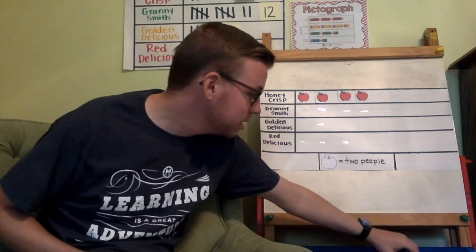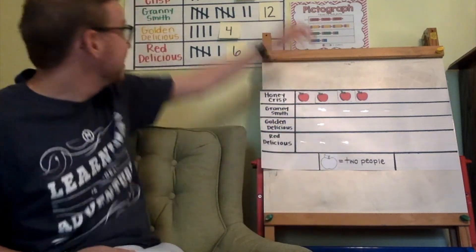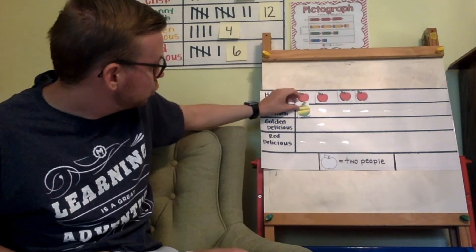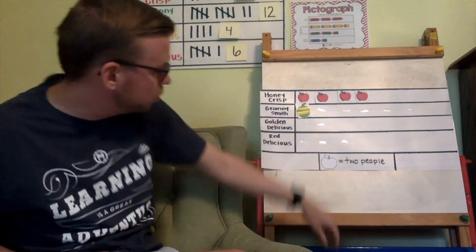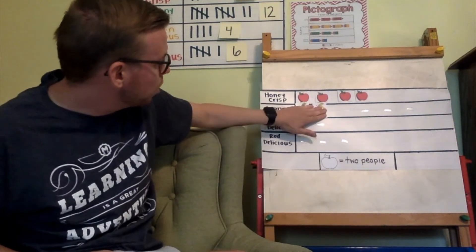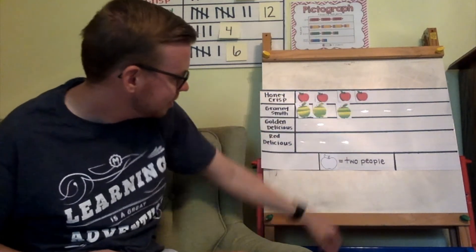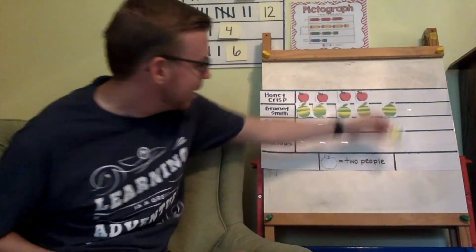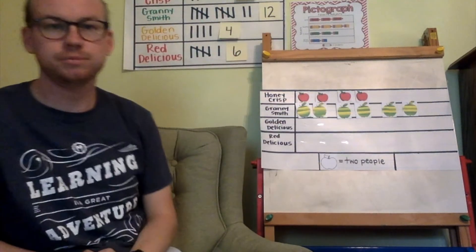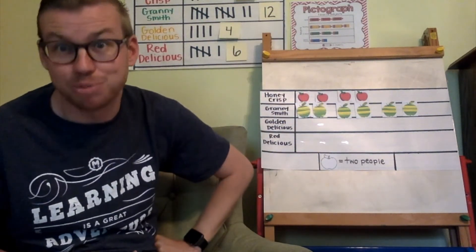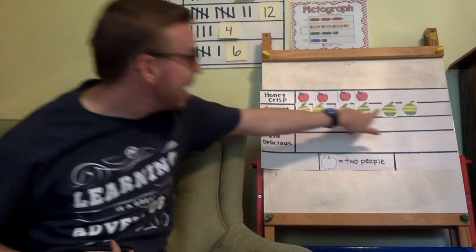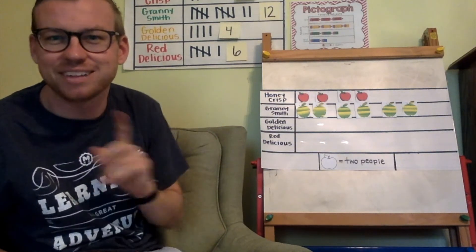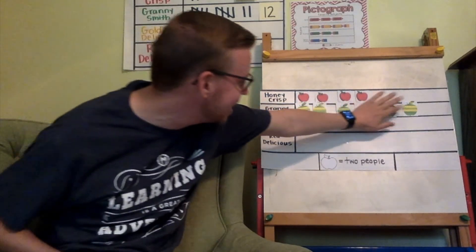For Granny Smith, we're going to count by twos until we get to twelve. Count with me: two, four, six, eight, ten, twelve. So I have six apples displayed on this graph for Granny Smith, because each apple represents two. Notice that if I would have only had four apples, it would have been the same amount as Honeycrisp.